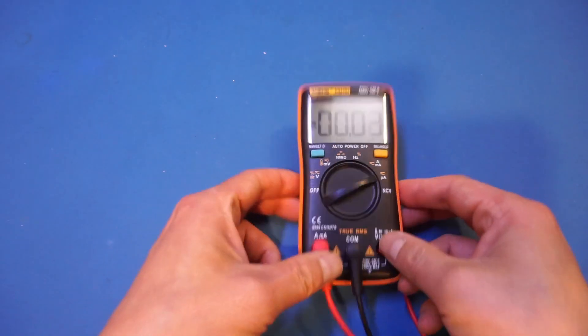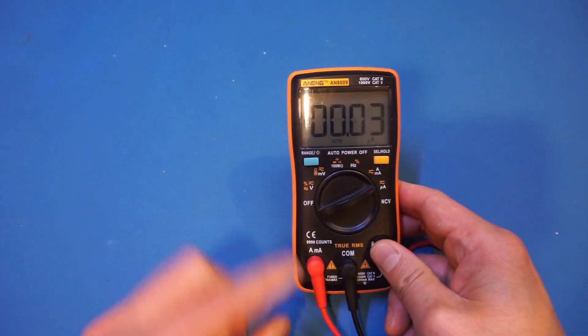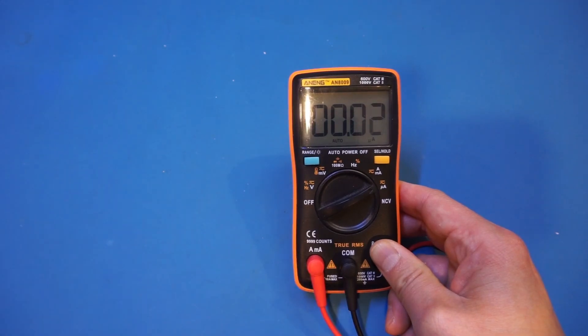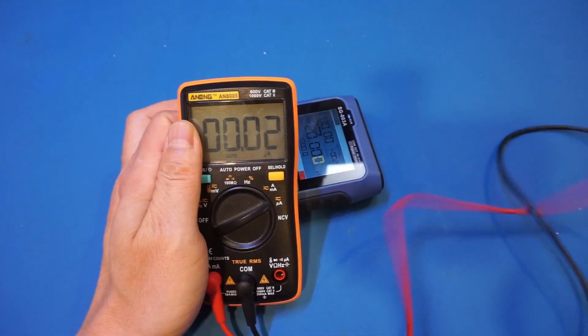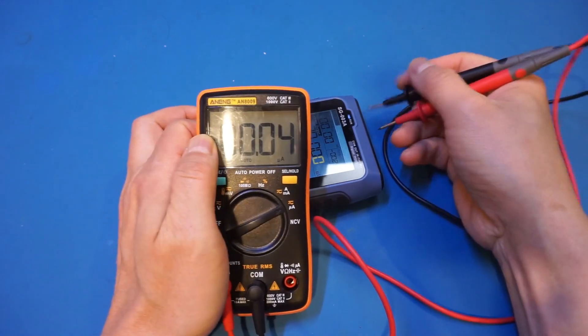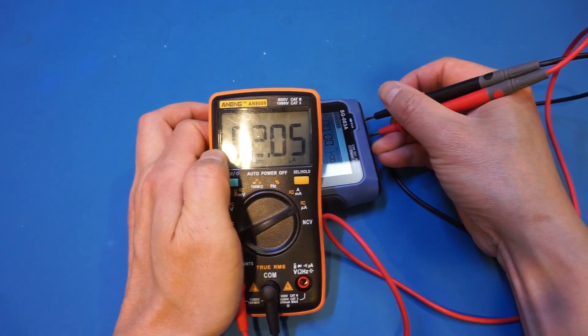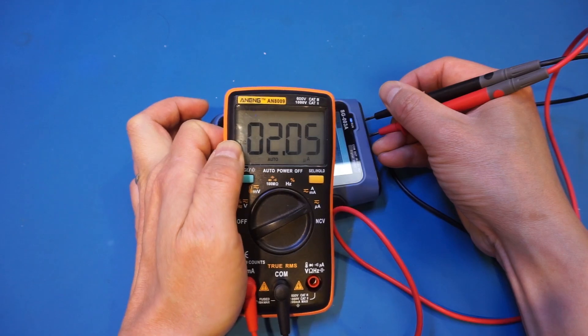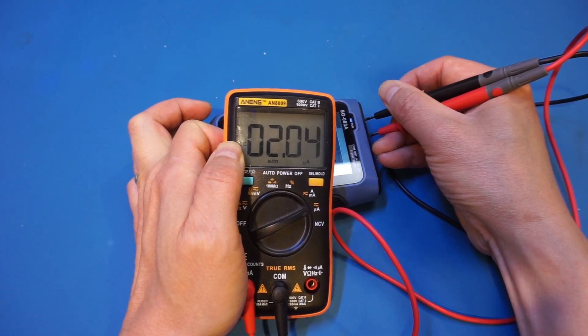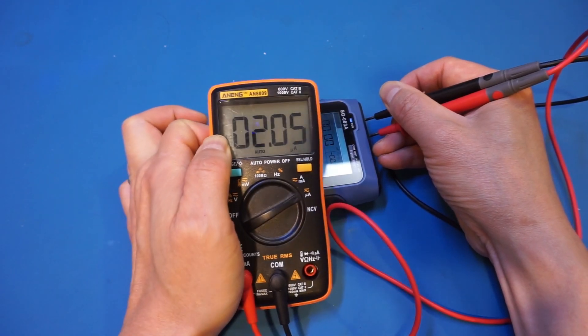Now we're in the microamp measurement mode, and the input jacks are in the amp range. So let's take a look here. And you can see we're getting incorrect readings. We're measuring two microamps, but in reality, the current is 20 milliamps.